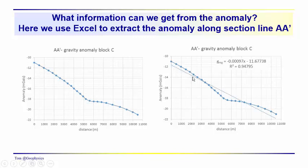So what we're doing here is we have the data in Excel. We fit a trend line here. And we get an equation for it. So this trend line gives us an estimation of what the regional field is in the area. And we can subtract that from the total in order to get the residual.